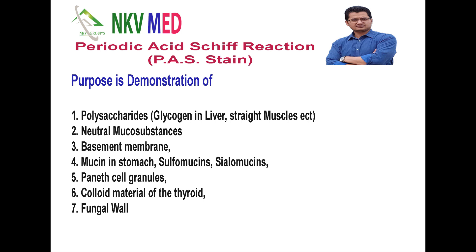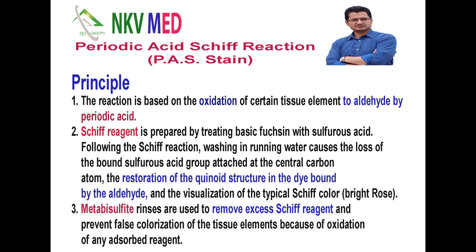In polysaccharides, mainly glycogen, which you know from the last video, it mainly gets stored in liver and skeletal muscles. Second is to find neutral mucosubstances. Third is basement membrane. Fourth is mucin in stomach — sulfomucins and sialomucins. Fifth is Paneth cell granules, colloid material of the thyroid, and fungal walls. The principle is very important — understand it carefully.